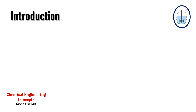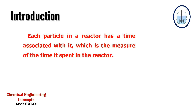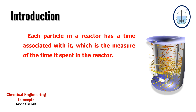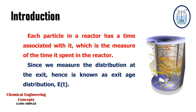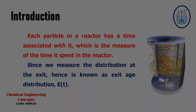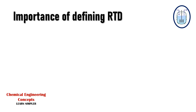Let's start with the introduction of what RTD means. It means the time that atoms have spent in the reactor — the residence time of atoms inside the reactor. This represents general non-ideal patterns. Since we measure this distribution of time of all atoms at the exit of the reactor, that's why we call it the exit age distribution.